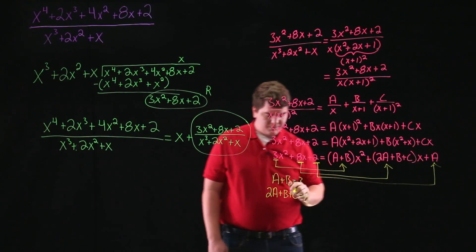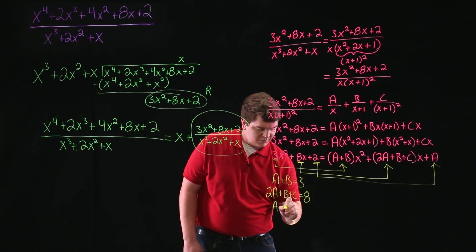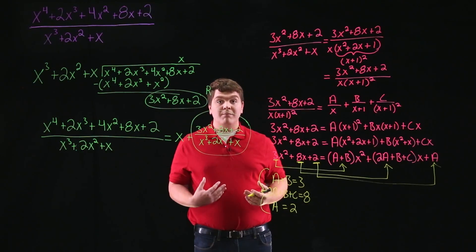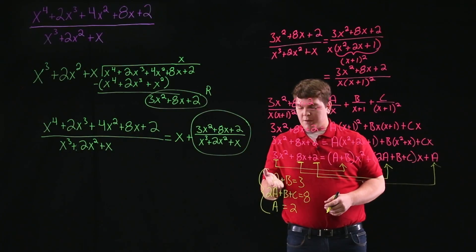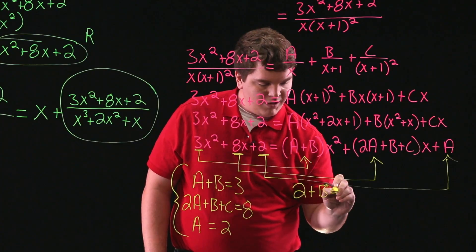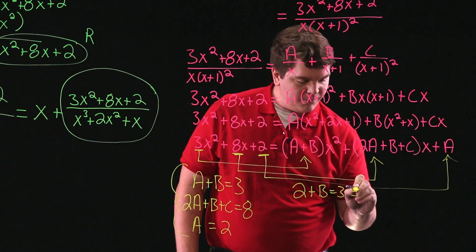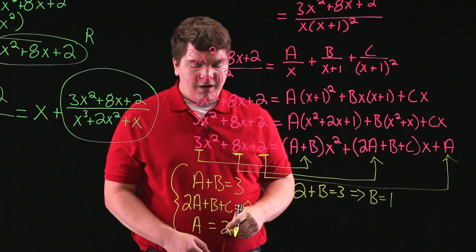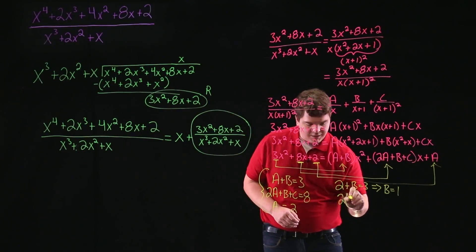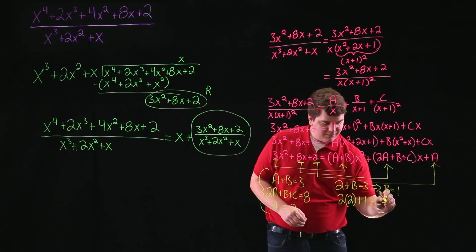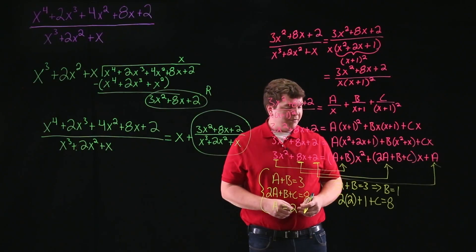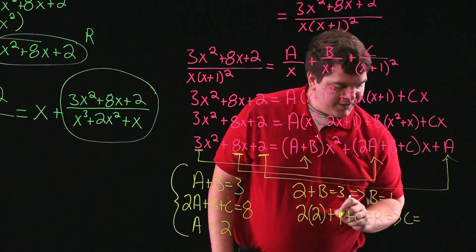Since we already know that A equals 2, we can use back substitution to solve for B and C. Substituting 2 in for A in the first equation: 2 plus B equals 3, so subtracting 2 from both sides we find B equals 1. Now substituting A equals 2 and B equals 1 into the second equation: 2 times 2 plus 1 plus C equals 8, so 4 plus 1 plus C equals 8, or 5 plus C equals 8. Subtracting 5 from both sides, we find C equals 3.